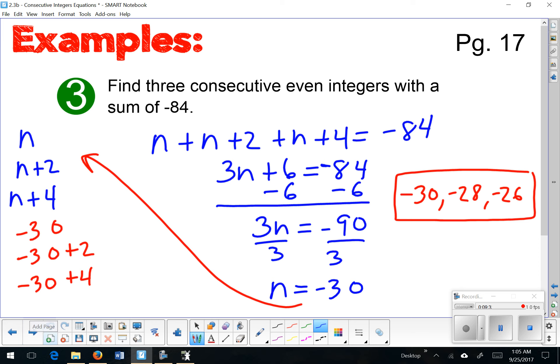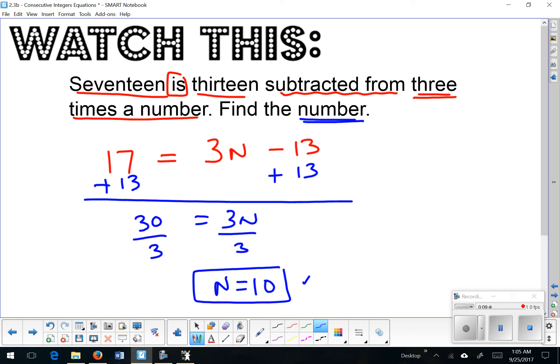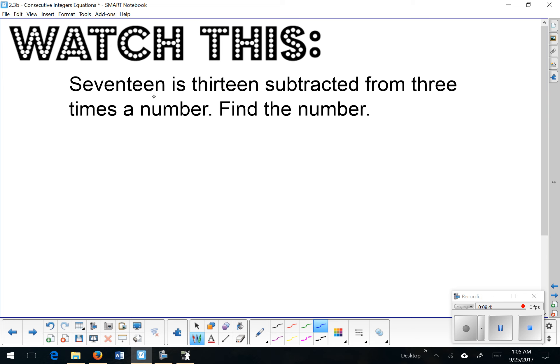Hopefully you still have room for one more example on page 17. We're going to look at a straight translation that will also be included in your homework tonight. Here is the example: 17 is 13 subtracted from three times a number. Find the number. So we're going to translate this like you just saw, but we only need to find one number.